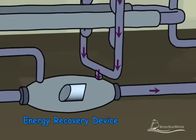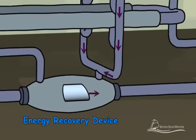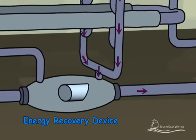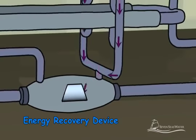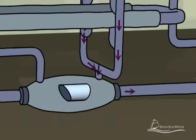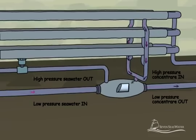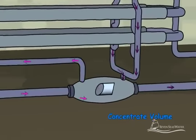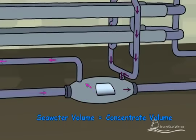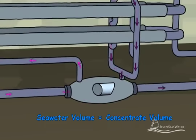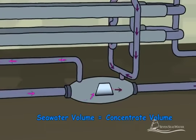To reduce the energy that is required to operate the reverse osmosis plant, the pressurized concentrated stream is piped into an energy recovery device. Here, up to 98% of the energy of the concentrated salt stream is transferred to an equal volume of the incoming seawater in an isobaric energy recovery device.